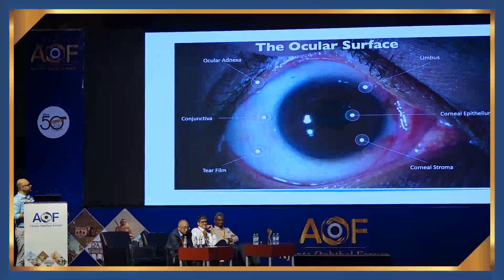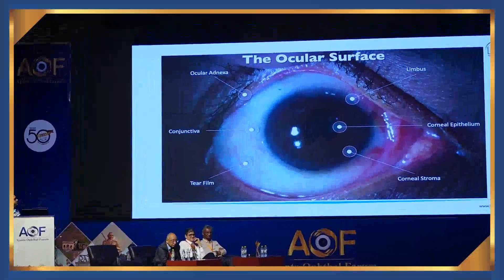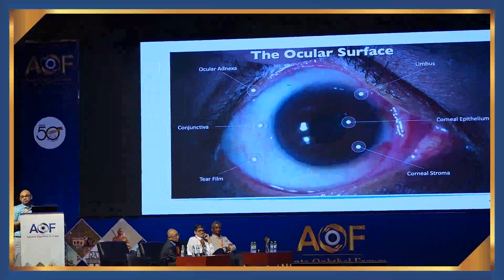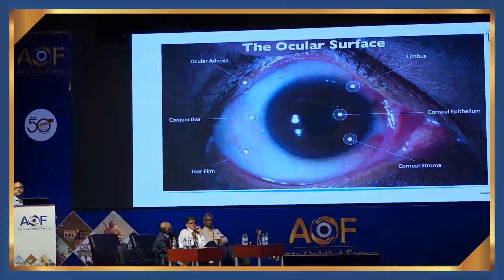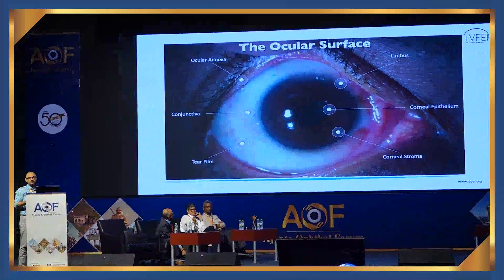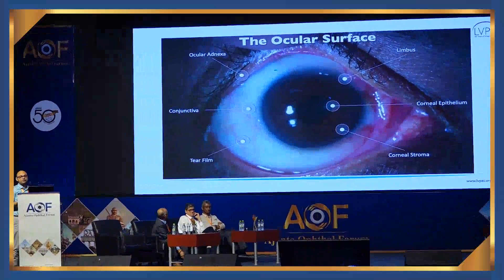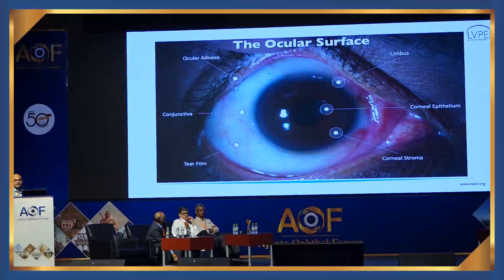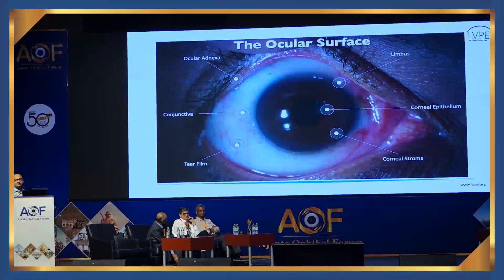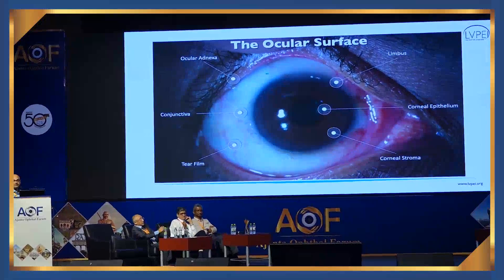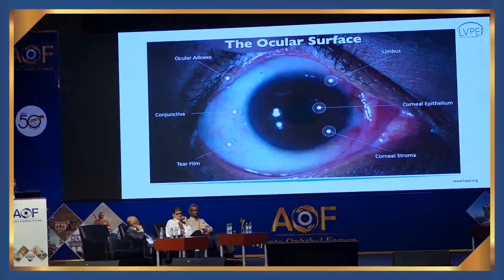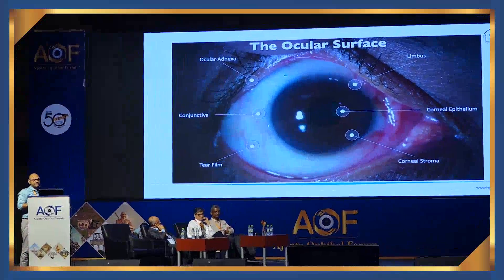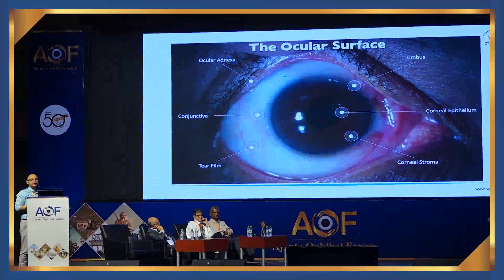I work in the area of ocular surface, which also includes the corneal stroma and corneal stromal regeneration. Many of you may be aware that corneal stromal opacification or scarring is one of the leading causes of blindness in the country — very different from the West, where endothelial dysfunction is the number one cause. In developing countries like India, corneal scarring is the number one cause, and we decided to find a way to treat it that does not require corneal transplantation.